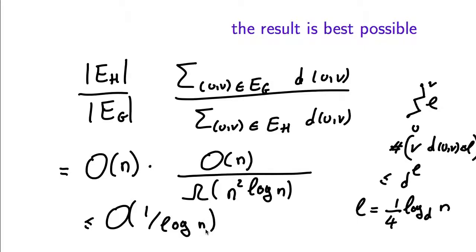So the rounding coming from Bourgain's theorem for the Leighton-Rao relaxation is best possible. It also means that as a result in geometry, Bourgain's theorem is best possible.